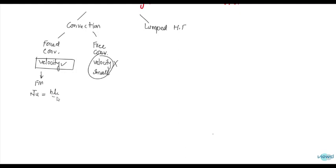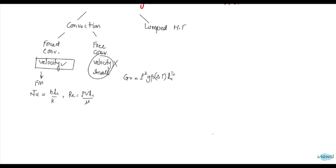The Nusselt number is equal to h·Lc / k and the Reynolds number is equal to ρ·Lc / μ. For free convection, the Nusselt number involves g·β·ΔT·Lc³ / μ². So now let us see how to find the characteristic length in the case of forced convection and in the case of free convection.